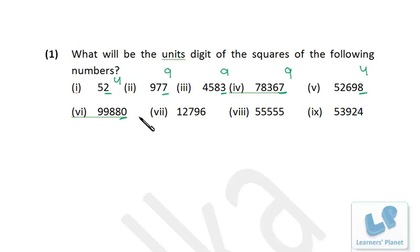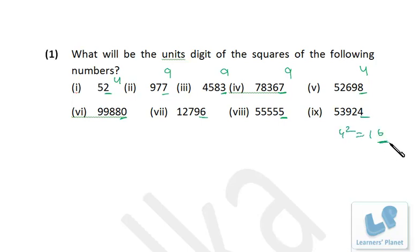For a number ending in 0, the square ends in 0. Ending in 6: 6²=36, so square ends in 6. Ending in 5: 5²=25, square ends in 5. Ending in 4: 4²=16, square ends in 6. The rule is: take the unit digit, square it, and the unit digit of that result is the unit digit of the original square.